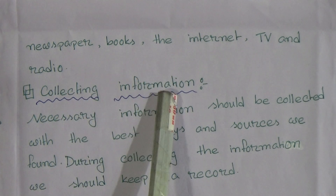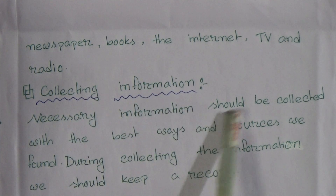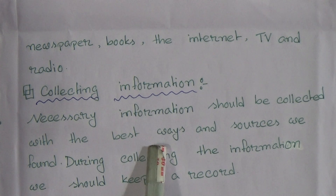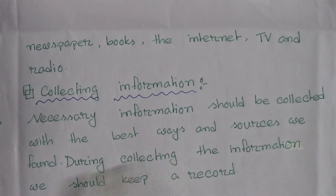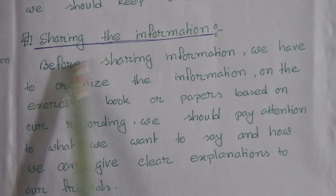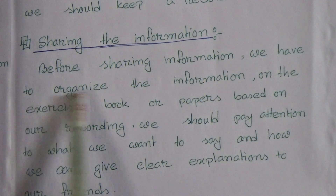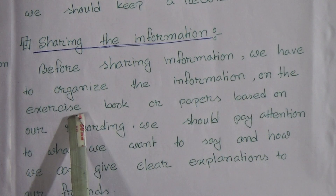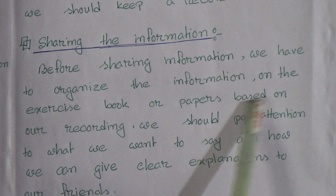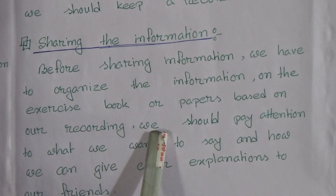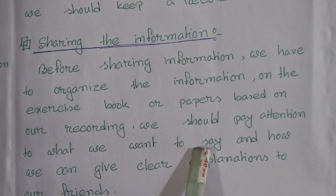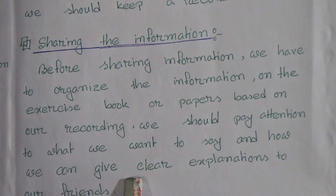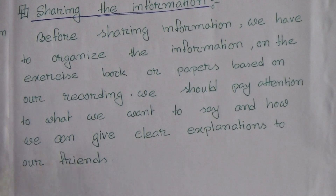Number 3: Collecting information. Necessary information should be collected with the best ways and sources we found. During collecting the information, we should keep a record. Number 4: Sharing the information. Before sharing, we have to organize the information in an exercise book or papers based on our recording. We should pay attention to what we want to say and how we can give clear explanations to our friends.